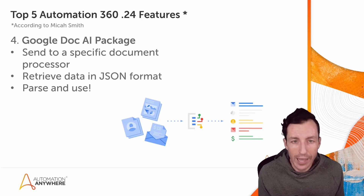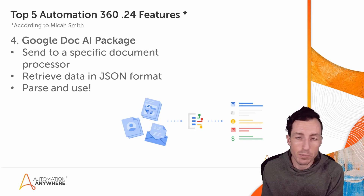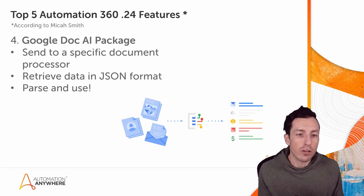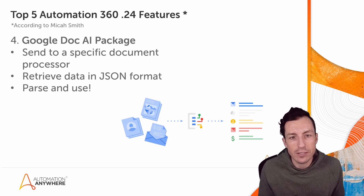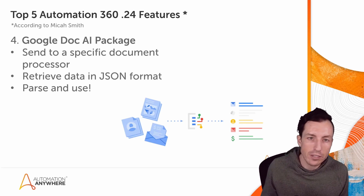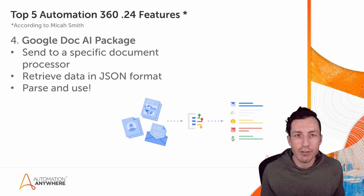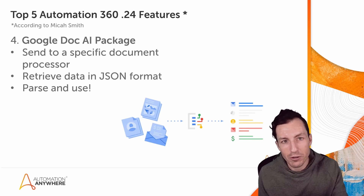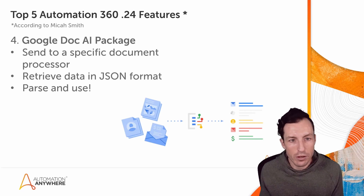Coming in at number four: the Google Doc AI package. This is great functionality if you're using Google Doc AI. It enables you to send an image or a document to Google Doc AI with a specific document processor. You can then extract all the data from those forms as key-value pairs, returned to you as JSON. You retrieve that JSON and parse and use it however you want. For example, a mortgage document or a 1040-EZ tax form — you send it, it extracts all the data with predefined document processors, sends it back as JSON. Simple to use: connect, send a document, close the session. A great way to do document processing within your Automation Anywhere bots.